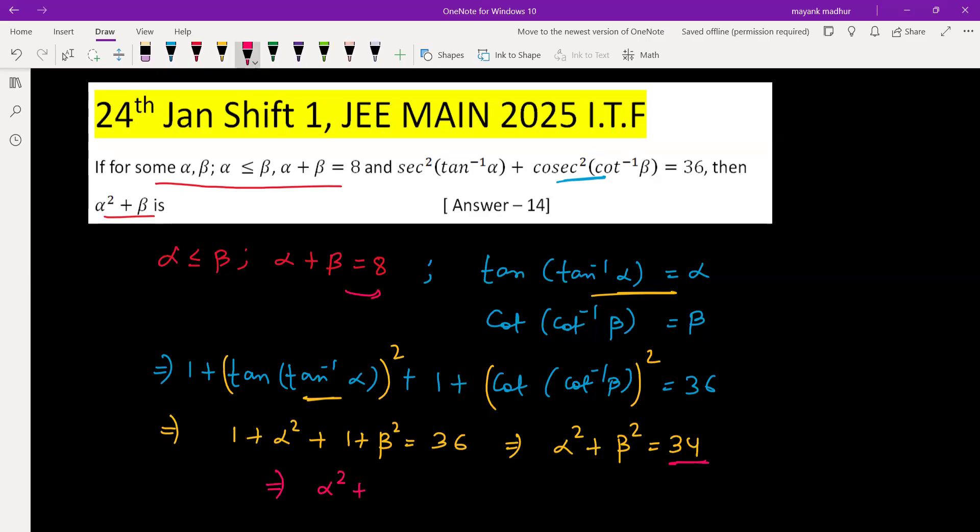Still, if you want to solve properly, you can write β = 8 - α. Substituting this, you will get a quadratic in terms of α, which is α² - 8α + 15 = 0. Solving this quadratic gives roots α = 3 and 5.